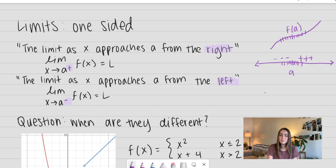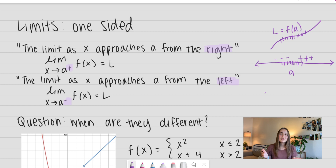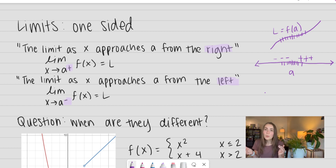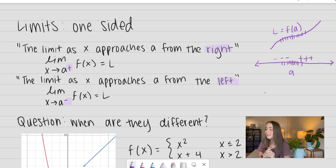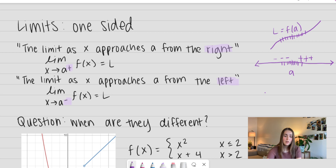That's going to be what our L is — that's the interesting part. The question is: when are they different? It doesn't make any sense why limits from opposite sides would be different, but we do have some great examples of when they are. Let's go ahead and dive into it.